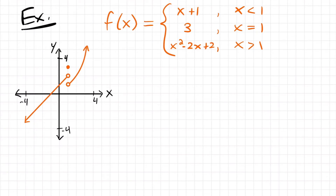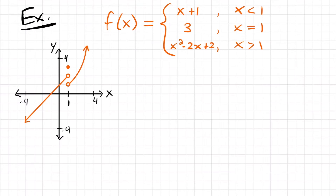And it's graphed right over here. So the question is, where is this function continuous? And if it's not continuous everywhere, where is it discontinuous? Right off the bat, I see that we have an interruption in our graph right here, which is a big pointer that we have a discontinuity. It looks like it's at x equals 1. So we know we have a discontinuity at x equals 1, but let's quickly show that it's discontinuous by using limits.